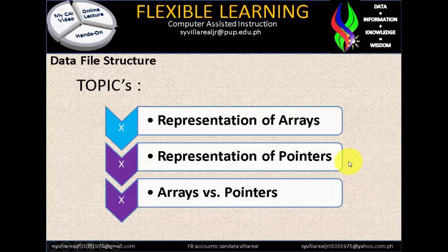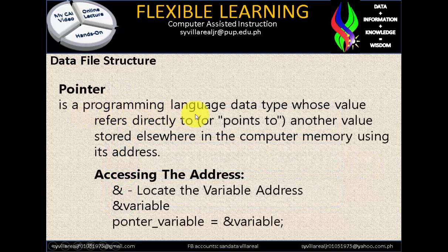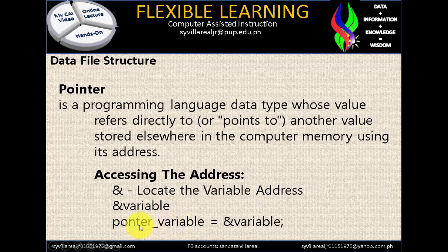Now let's move on to our second topic: representation of pointers. A pointer is a programming language data type whose value refers directly to, or points to, another value stored elsewhere in the computer's memory using its address. To access the address, we use the ampersand sign, which locates the variable address. So we write: pointer_variable = &variable, meaning the address of this pointer variable is equivalent to ampersand variable.